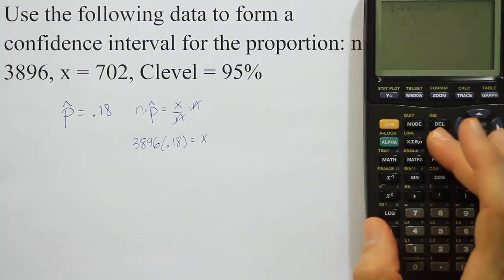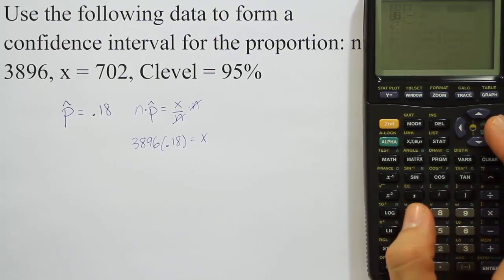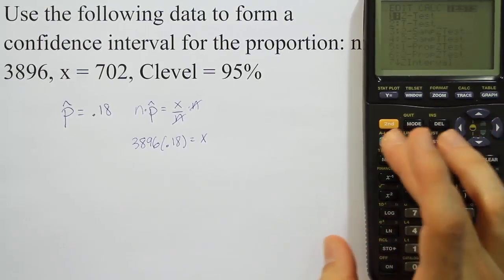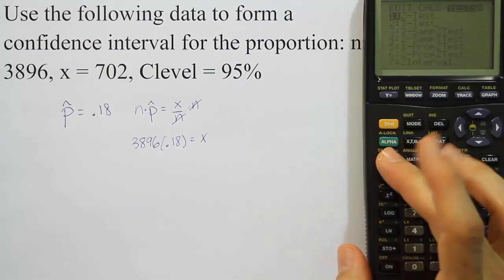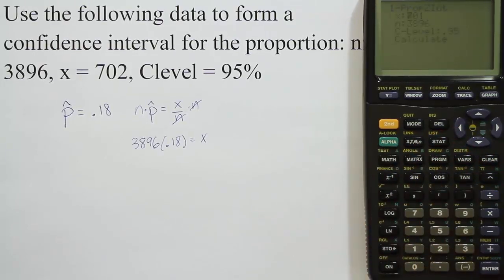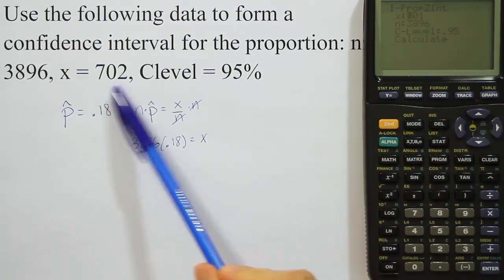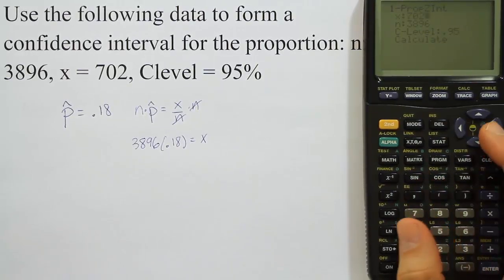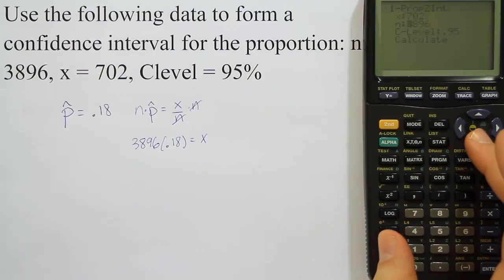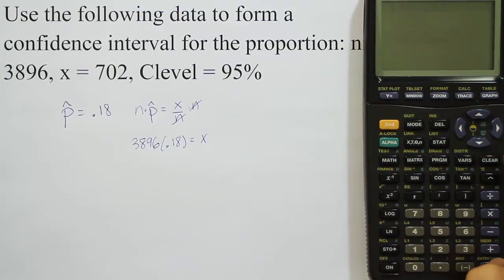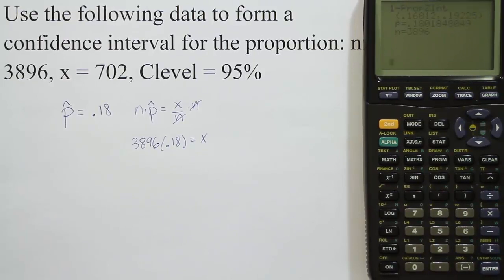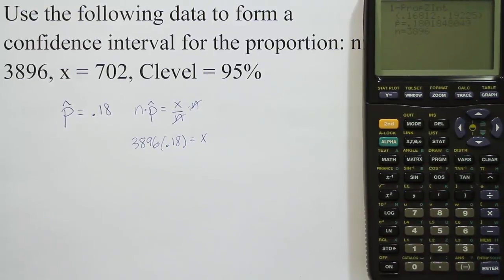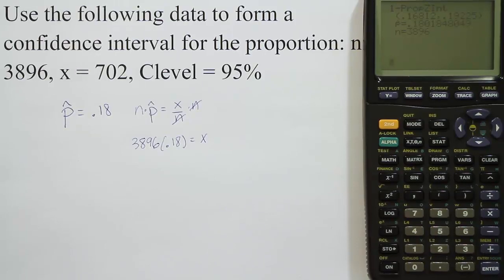So again, just to recap how we do this, we press stat, go over to where it says test. We'll take option A. I'm going to go there directly by hitting alpha A in my calculator. I get the number. I enter your x value, which is 702 in this case. So I'll type in 702. Enter your n that's already entered in for us in this case. The confidence level 0.95 as a decimal. Hit calculate and you get your solution. All right, so that's it. That's how to use a graphing calculator to create a proportion interval.